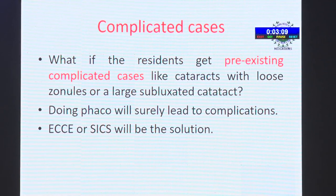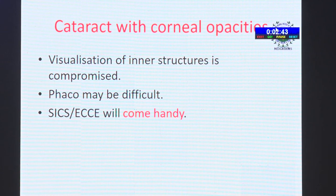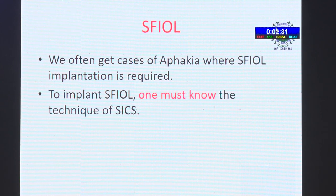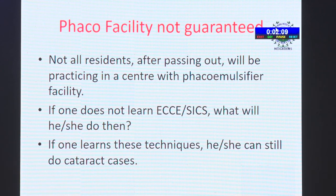What if residents encounter pre-existing complicated cases like subluxated cataracts? Doing FACO will surely lead to complications, and ECC or SACS will be the solution. Not all hard or very hard cataracts can be done by phacoemulsification - SACS or ECC handles these with equally good visual outcomes. Cataracts with corneal opacities compromise visualization, making FACO difficult. Also, when SFIOL implantation is required, one must know SACS technique. If the FACO machine stops functioning mid-surgery, not all hospitals have a backup machine.